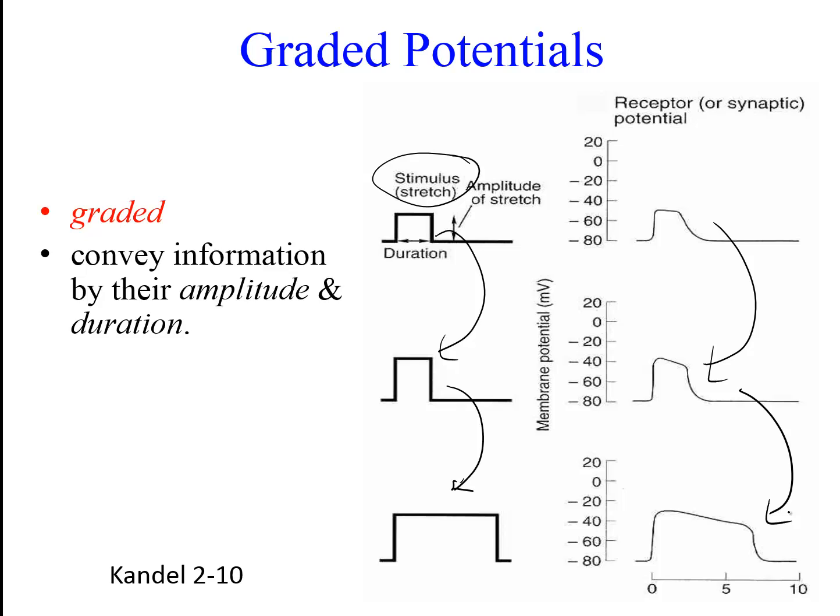Thus, we say that graded potentials are graded, meaning that they convey information about the magnitude and duration of a stimulus based on their amplitude and duration. Graded potentials can vary from about 0.1 mV to 50 mV in amplitude and 1 to 100 ms in duration. Typically, they are about 0.1 to 10 mV in amplitude and about 1 to 10 ms in duration.